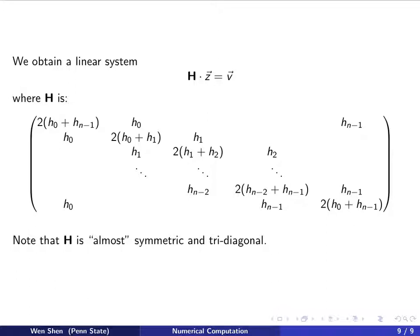So putting all the equations together, we again obtain a linear system, and the coefficient matrix H here now takes this form. And the first row and the first row will be collecting terms from the first equation, and the last row are obtained by collecting terms from the last equation.